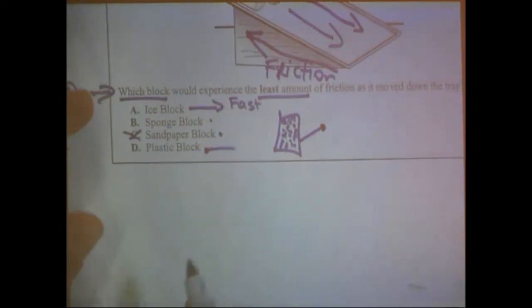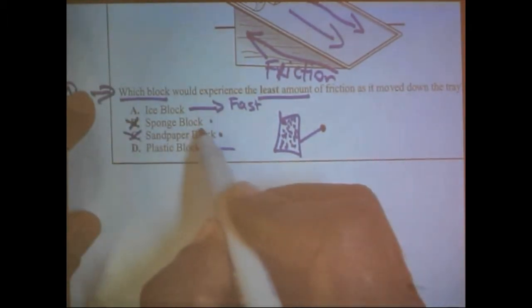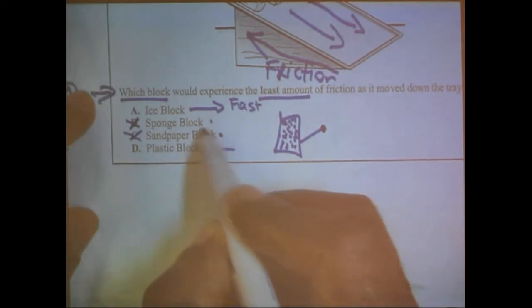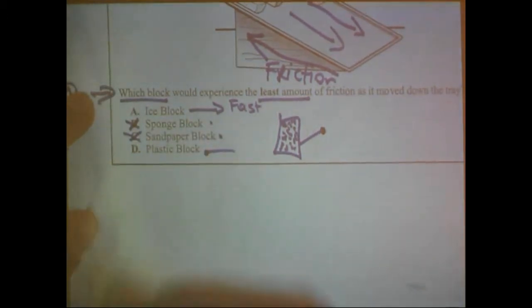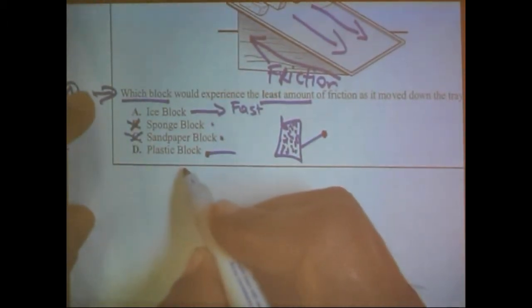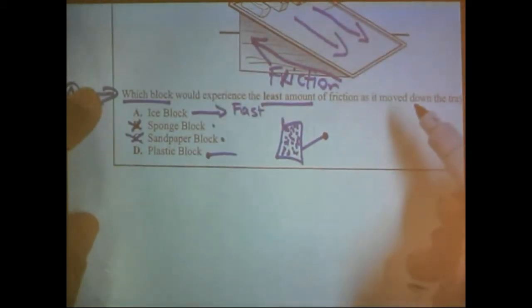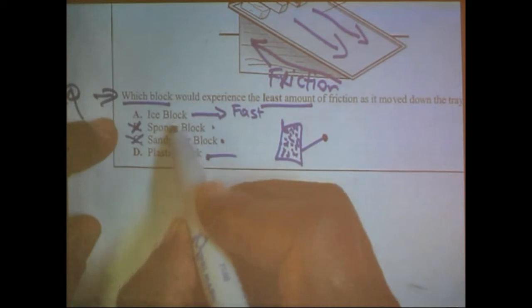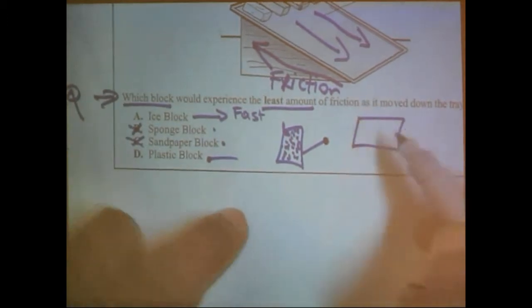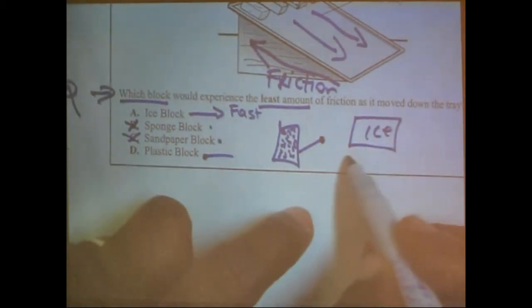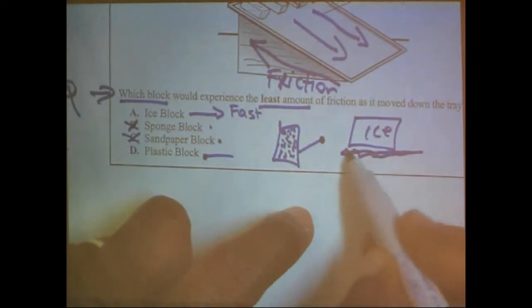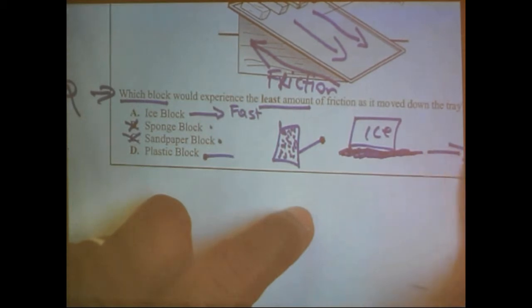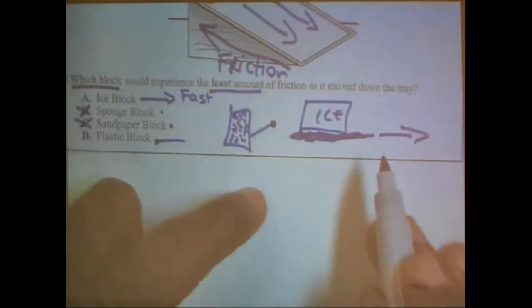Then we move over to the next most opposing. This is the sponge block. Is this going to move down quickly? No. So we crossed it out. We have two now that we're working with. D and A. Plastic block. The plastic block may move down a little faster because plastic on plastic, I can see why it would move down a little faster than the sponge and the sandpaper. But now we know automatically that the fastest one that's going to go down is going to be the ice block. Ice block because when you heat up the ice, ice block, when you heat up the ice, it's going to melt. And it's going to have water. And then the water is going to act as a sliding force that helps to make it easier for the block to move down the tray.